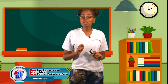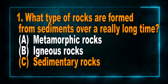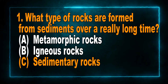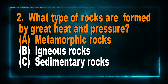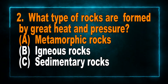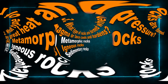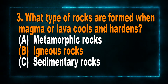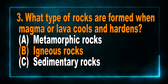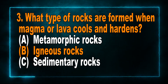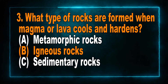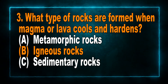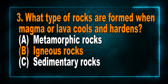Welcome back — were you able to get them all correct? Let's check. Question 1: What type of rocks are formed from sediments over a really long time? The answer is sedimentary rocks. Question 2: What type of rocks are formed by great heat and pressure? The answer is metamorphic rocks. Question 3: What type of rocks are formed when magma or lava cools and hardens? The answer is igneous rocks. Note: 'igneous' is a word that means fire or heat, so whenever you think about igneous rocks, think about volcanoes.